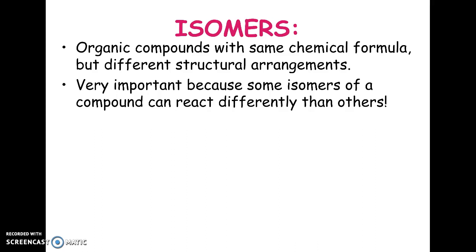Cellulose, which is what plant cell walls are made of, has the same basic formula as starch. But because of the way that it's put together, we can't digest cellulose. So cellulose, when you eat it, is basically what we call fiber — it goes right through your body, undigested. It's still good because it helps push other things through your body, but you couldn't survive just eating cellulose because you can't extract the calories from it. You do not have the enzymes necessary to digest it, so it just passes through. This would be one example of isomers.